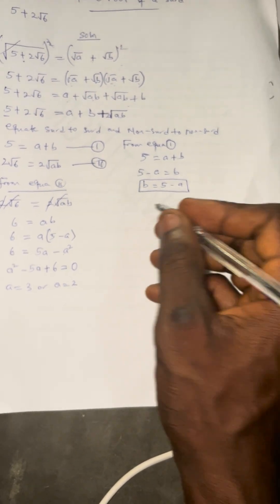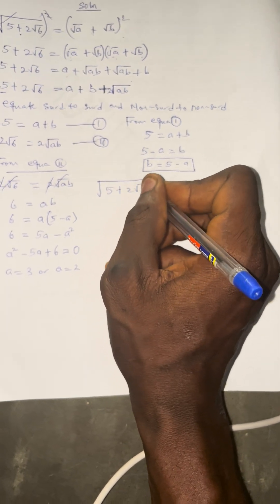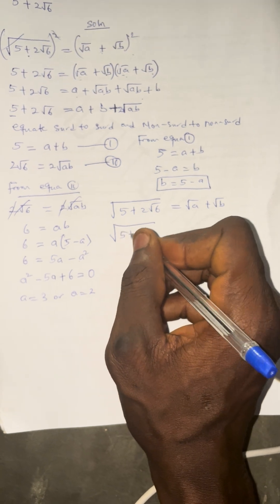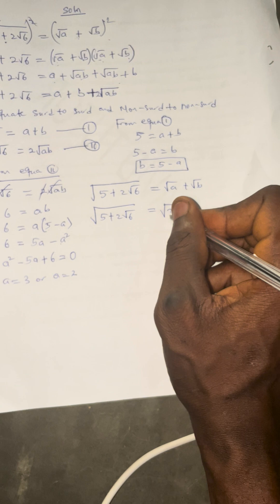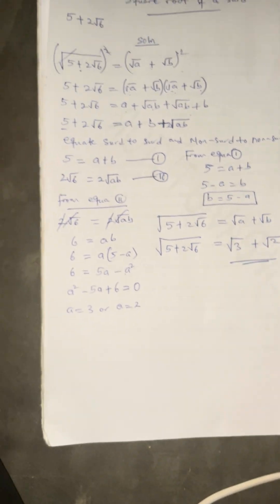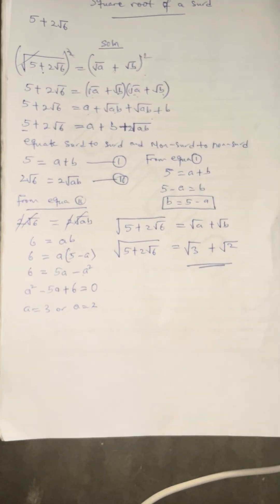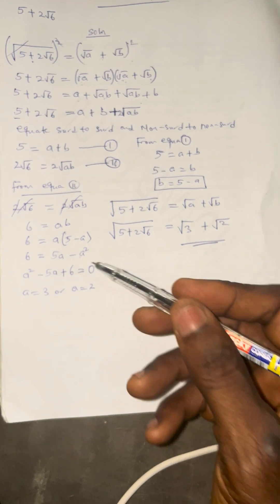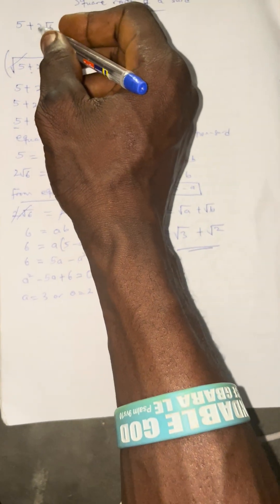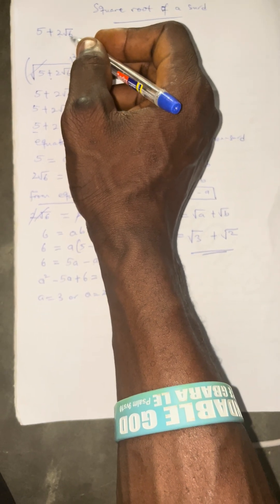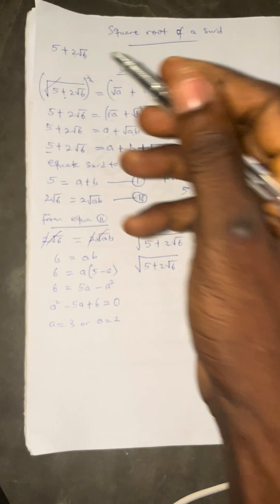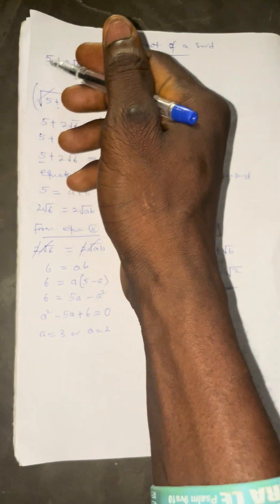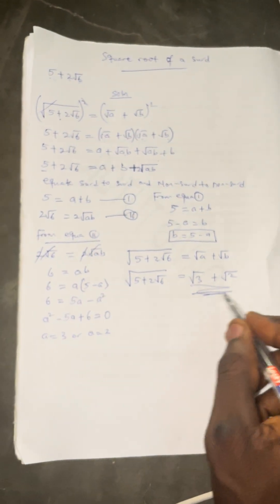So A equals 3 or A equals 2. Going back to our original form: square root of 5 plus 2 root 6 equals root A plus root B. The final answer is root 3 plus root 2. The shortcut: when there is a 2 outside the square root, think of two numbers that add to give 5 and multiply to give 6. Those numbers are 3 and 2, giving root 3 plus root 2.